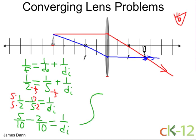So, now we have a common denominator. We simply have to do 5 minus 2, which is 3. So we have 3 tenths equal to 1 over the image distance. And if I flip both sides, I get 10 thirds equals the image distance. Or in other words, the image distance is equal to 3 and 1 third units.